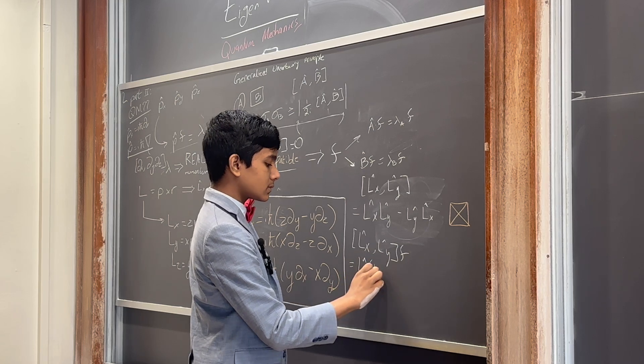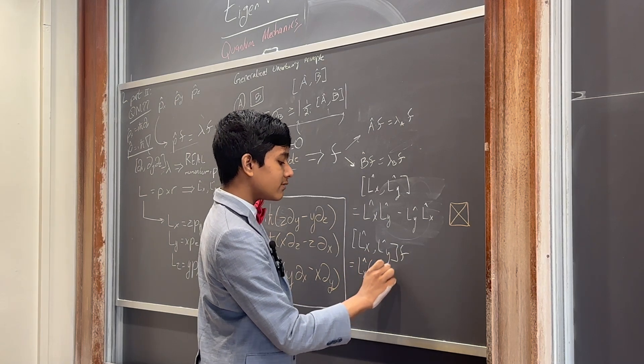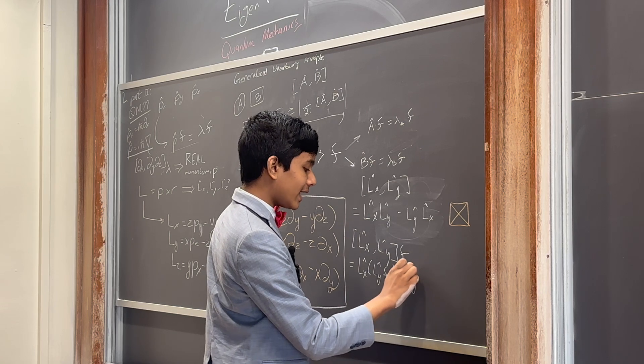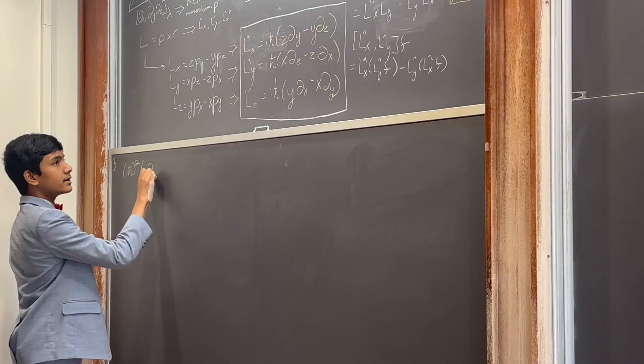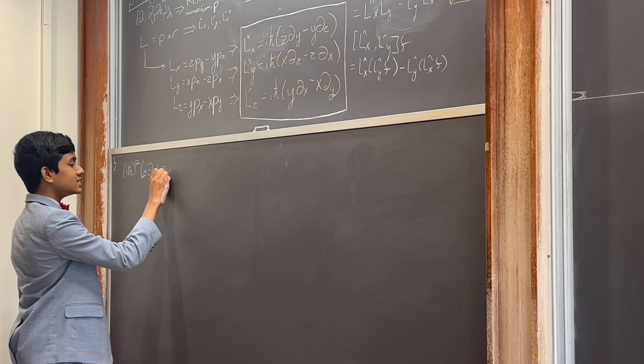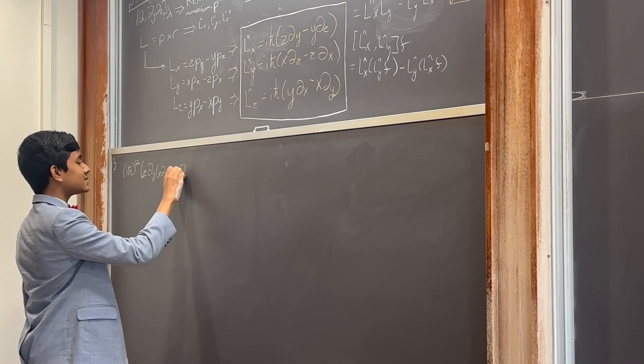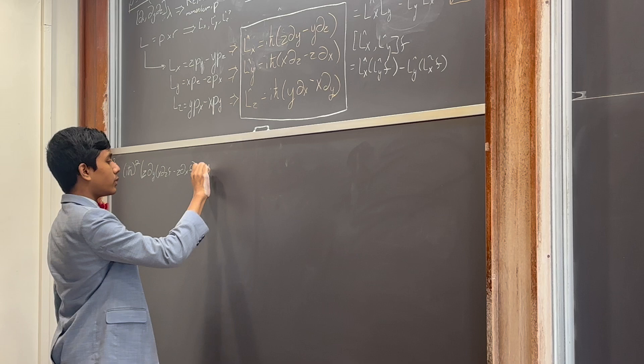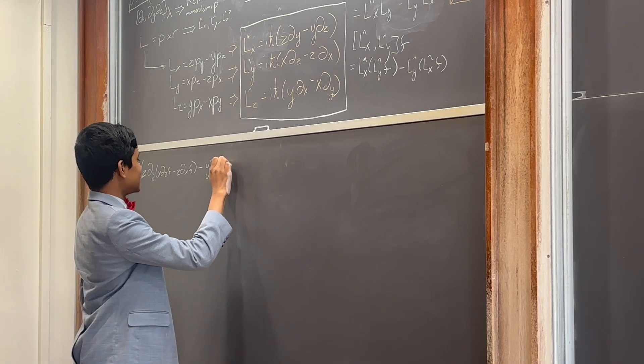Lx hat, Ly hat, f minus Ly hat, Lx. Y of x partial z, f minus z partial x, f minus y partial z, f of the same exact thing.